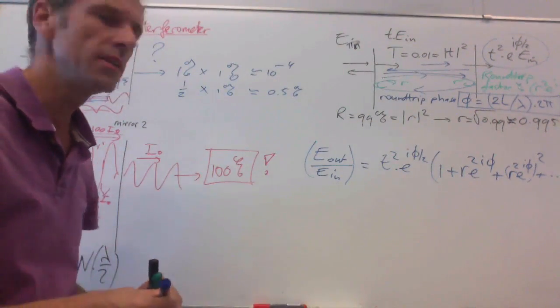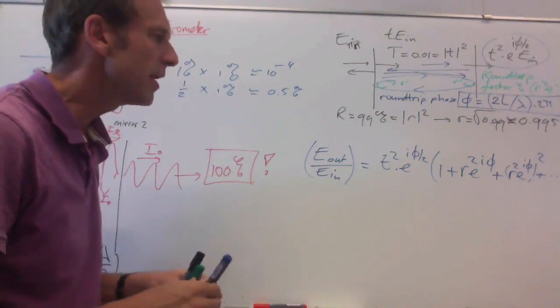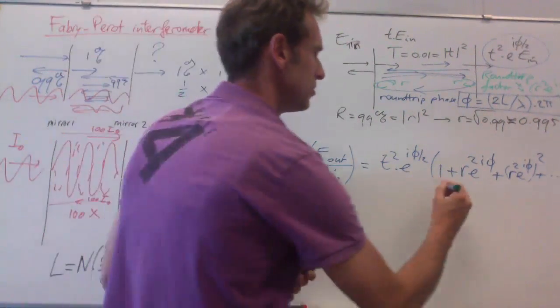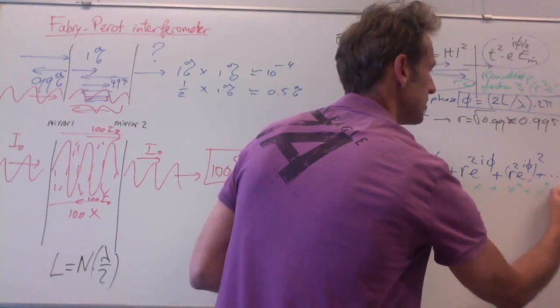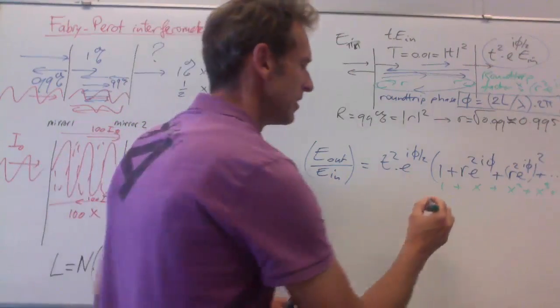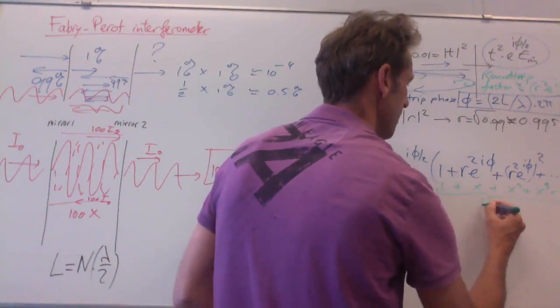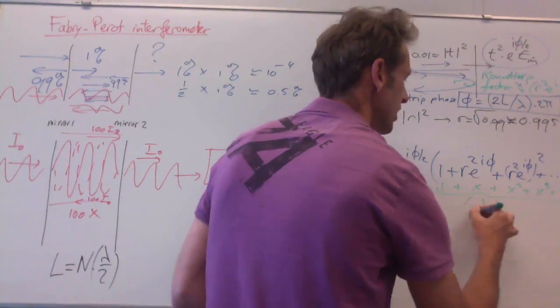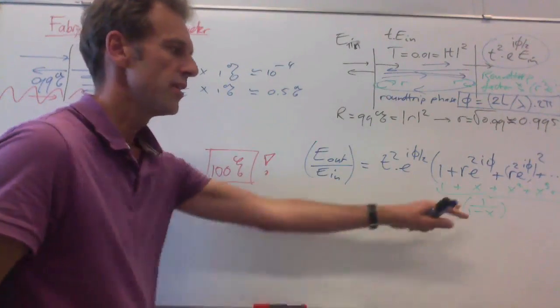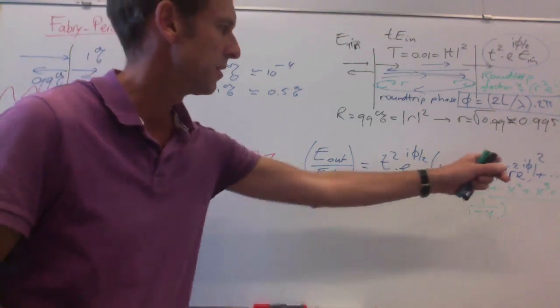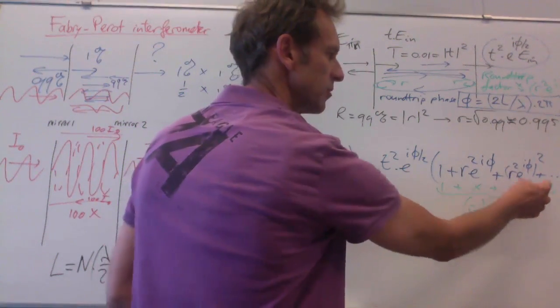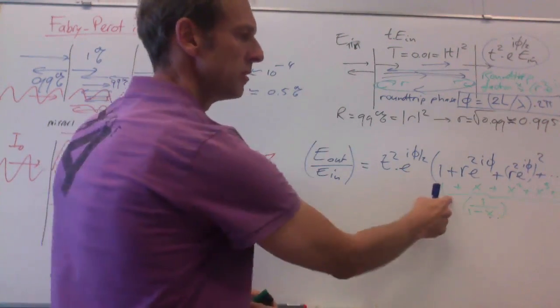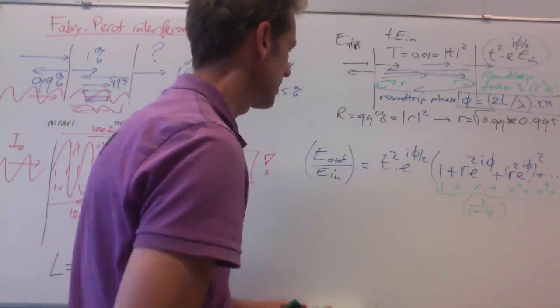And then, if you make another round, you get this factor squared and then to the third. So mathematically, the challenge is to add these things up, and you might recognize here the series 1 + x + x² + x³, etc. And you might also recognize that if you add these things up, you can rewrite them as 1 divided by 1 minus x.